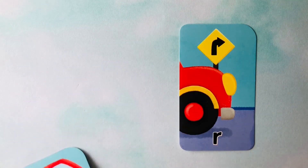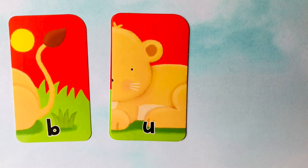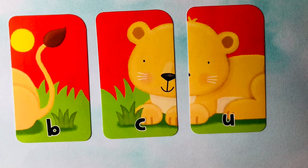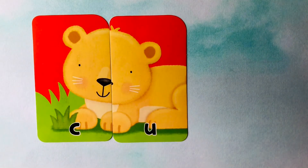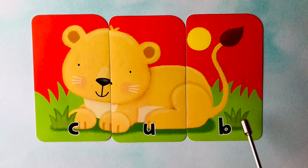Let's do one more. Looks like we're starting off with a B, then we have a U, and we have a C. I think this might be trying to spell cub. Can you spell cub with me? I think it starts with a C, then it follows up with a U, and a B. This looks like a cub. C, U, B. Cub. One more time — C, U, B. Spells cub.